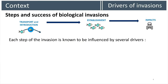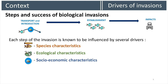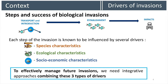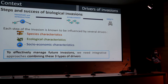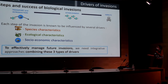The success of each step of the invasion is influenced by several drivers belonging to species characteristics, such as the ecological tolerance of a species; ecological characteristics such as the ecological proximity between the native and introduced environment; and socio-economic characteristics such as the human needs of the species. It is really important to know which characteristics influence the invasion in order to effectively prevent and manage future invasions, and to do so, we need approaches combining these three types of drivers.